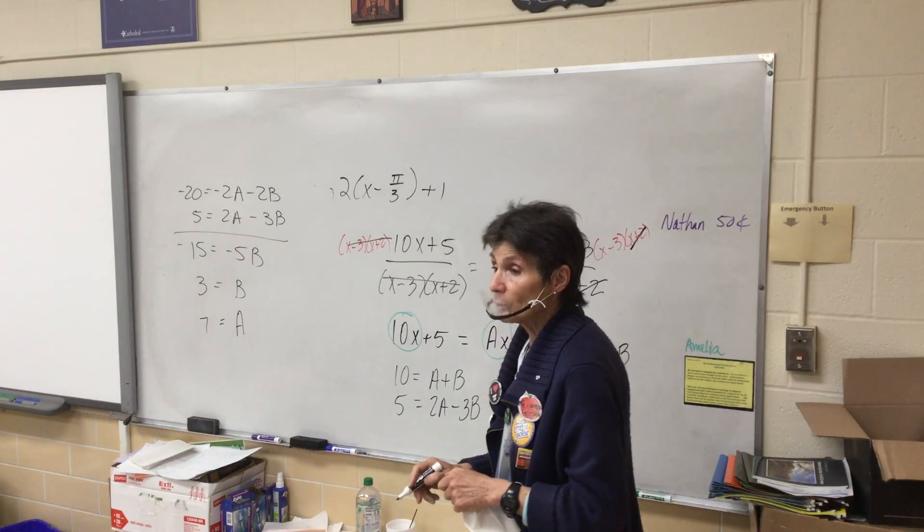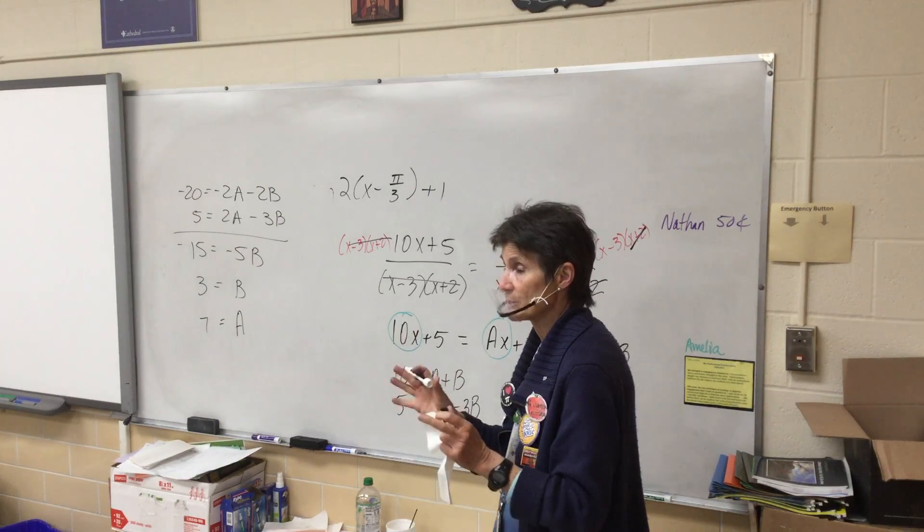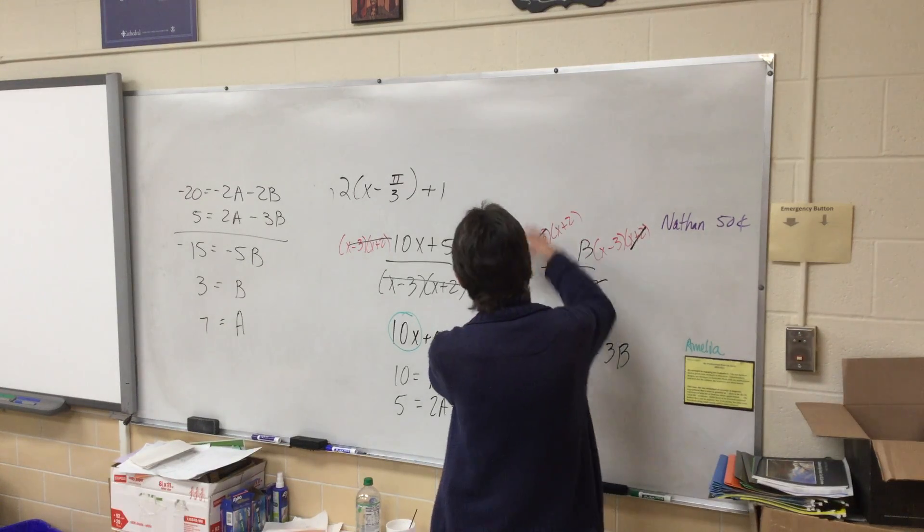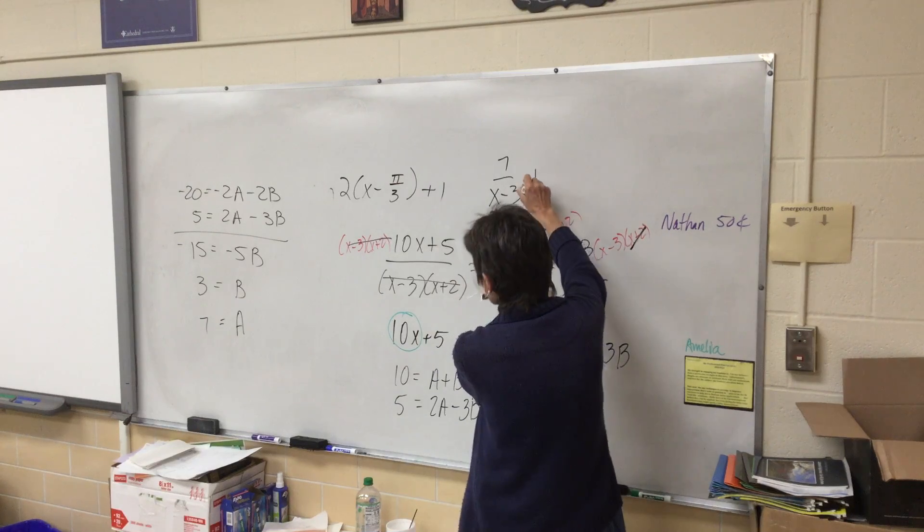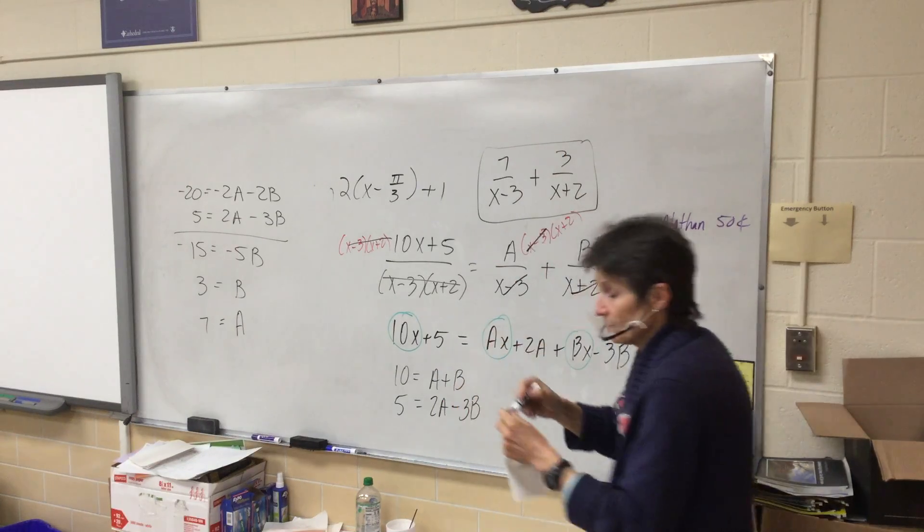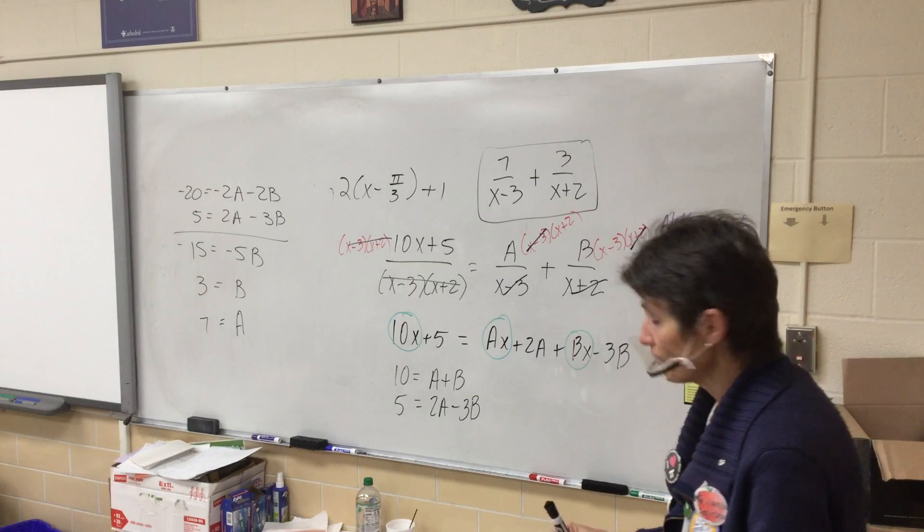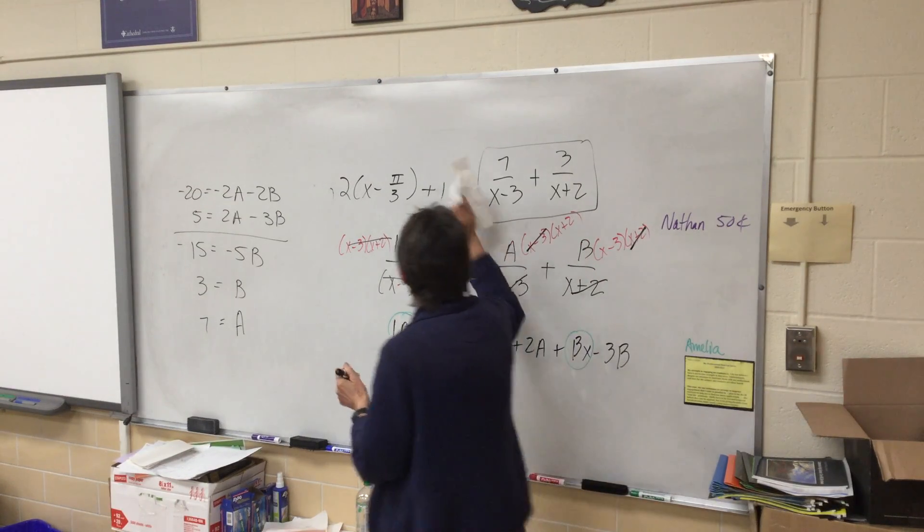And then this is about the only time that your answer is not an ordered pair. When you do a system normally the answer is an ordered pair. This time we're going to go back and say, okay, our partial fractions are 7/(x - 3) + 3/(x + 2). That would be the answer to the question, because you were finding the small fractions that add up to the original fraction.